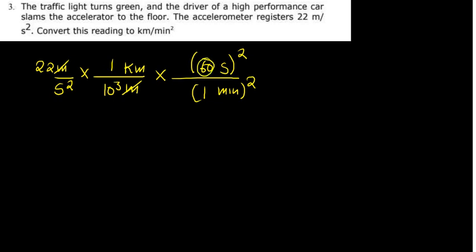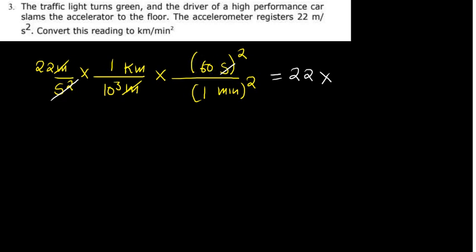So 60 squared becomes 3600. The second squared can cancel with the second squared here. One squared will become one, and then we're going to have a minute squared. So the answer is therefore going to be 22 multiplied by 3600, and then in the denominator we're going to have 10 to the power 3.